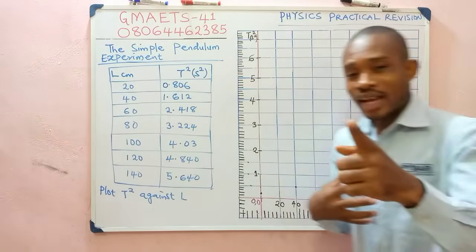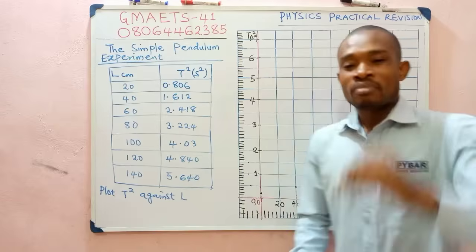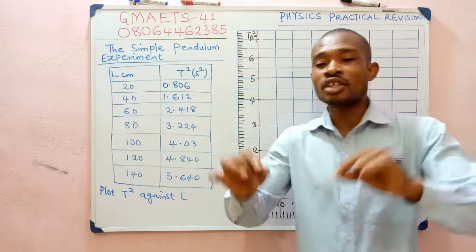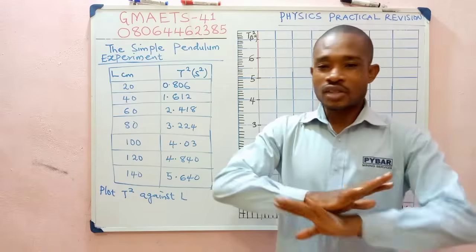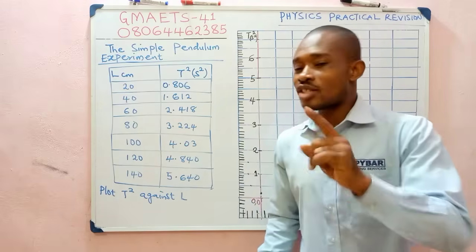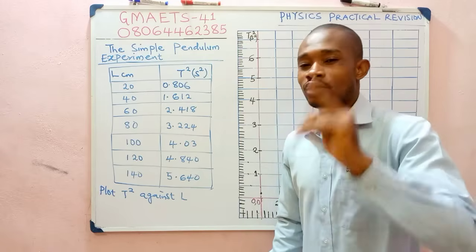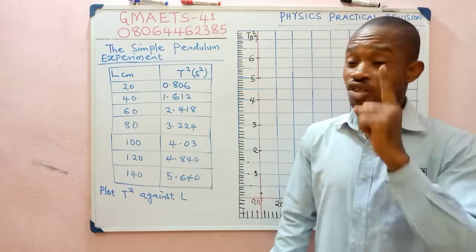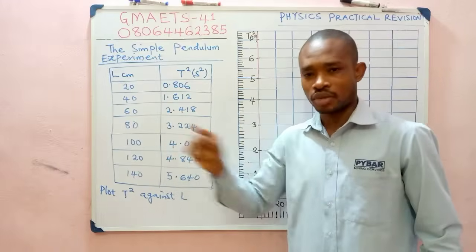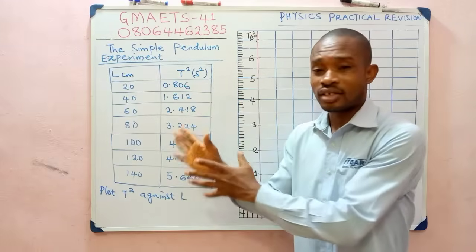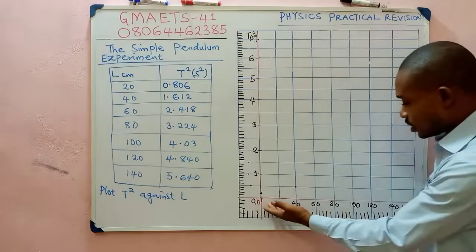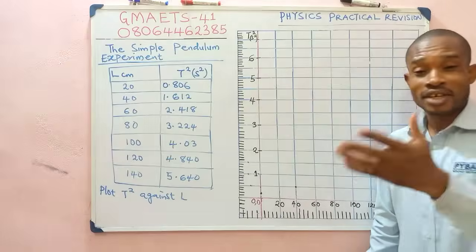Before I proceed, I want to state this: the centimeter you choose in selecting your scale depends on you — it does not concern anybody else. But the unit does not really depend on you; the unit is dependent on the values given in the table, the values you obtained from the experiment that you're about to plot.